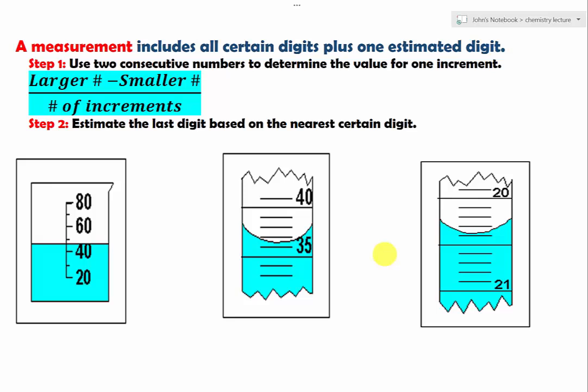In this lesson, we are going to learn how to read measurements so that a measurement includes all the certain digits that we can prove based on the instrument.